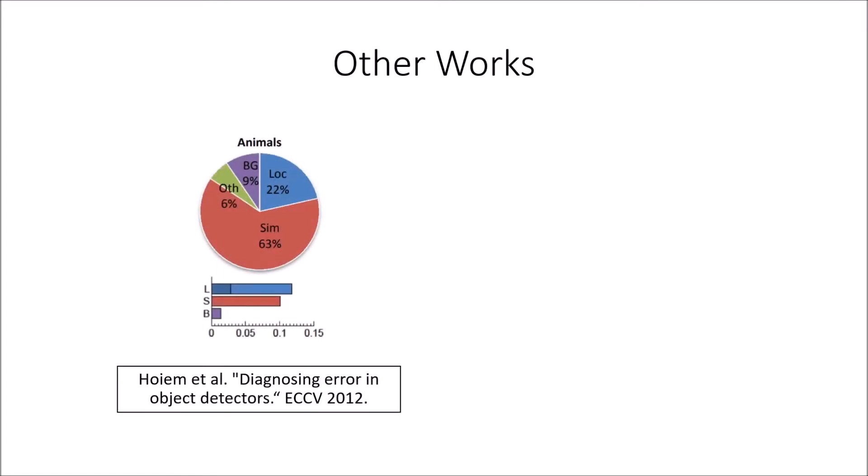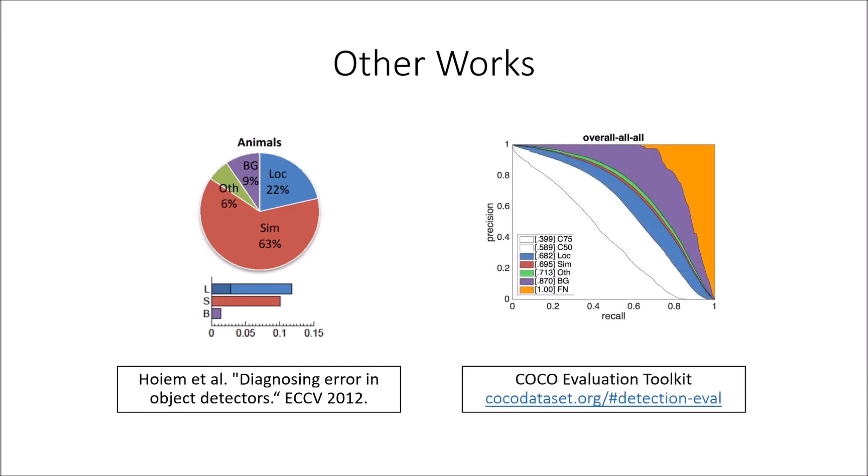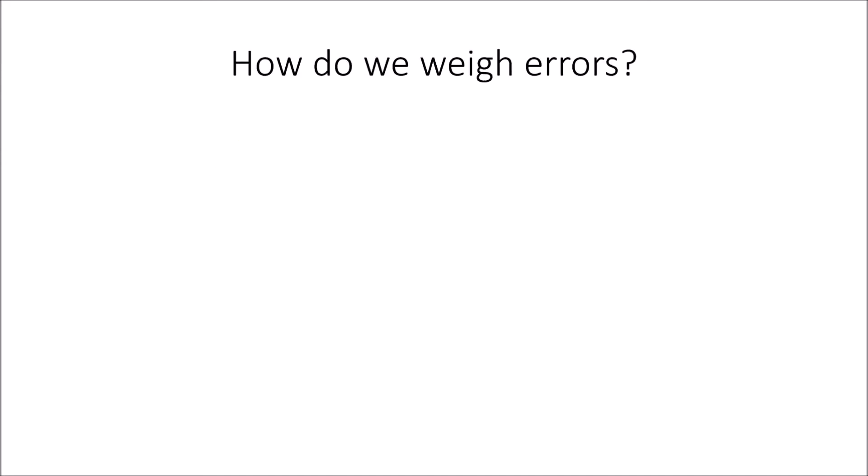There are only a few other works in this space that attempt to provide a useful summary of all the errors in a detection model, such as Derek Hoiem et al.'s seminal work on diagnosing errors in object detectors, and the analysis mode built into the COCO evaluation toolkit. However, both have issues, such as being dataset-specific or being difficult to interpret. So it's clear that we want to extract the contribution of each error in our models, but what's not clear is how we should weigh these contributions. Hoiem et al.'s work and the COCO eval toolkit both weigh errors differently, and both approaches have weaknesses.